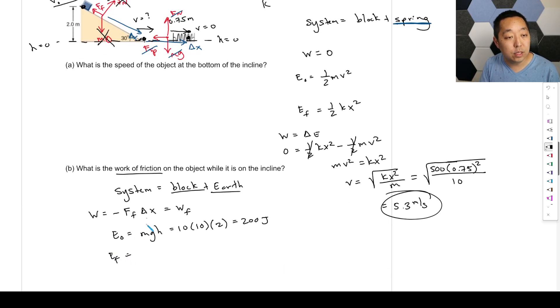Okay, final energy at the bottom does have kinetic energy. Well, it's moving, does have some kinetic energy, and has no gravitational potential energy because the height is zero down there. So this is going to be one half times 10 times V. We do know what that is, 5.3 squared. So it's going to be squared times 0.5 times 10. That's going to be 140.6 joules.